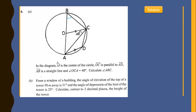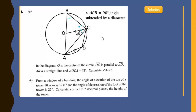Since O is the center and AB passes through the center, AB is a diameter. If a diameter subtends an angle at the circumference, that angle is 90 degrees. So angle ACB is 90 degrees — the reason being that the angle subtended by a diameter at the circumference equals 90 degrees.